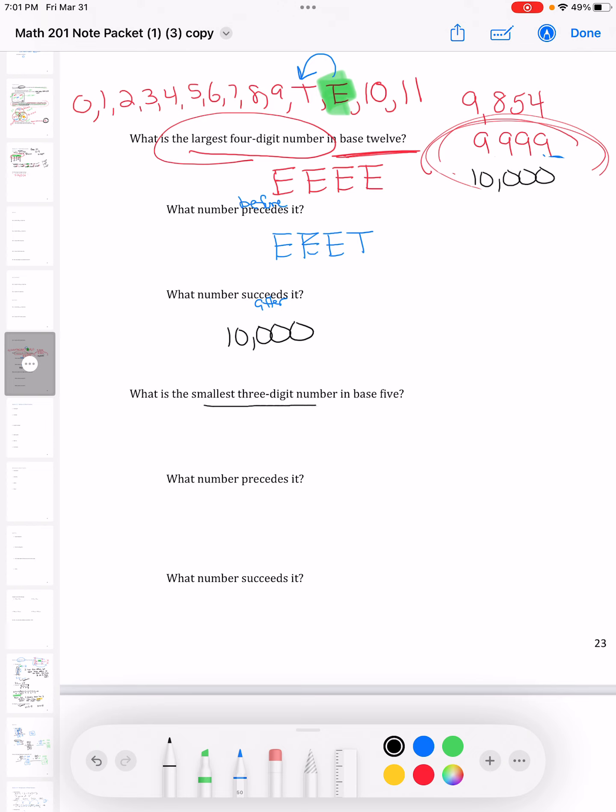Just think about what the smallest three-digit number is. Anywhere. Doesn't matter. Just going down the street, you ask someone, hey, what's the smallest three-digit number? Think about that and write that down.